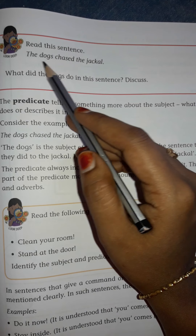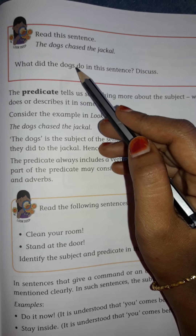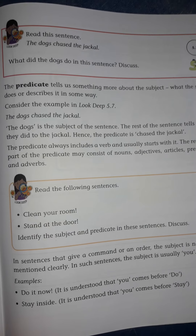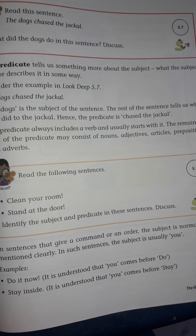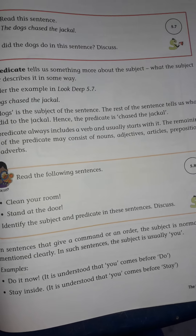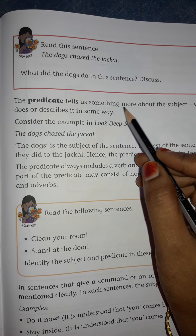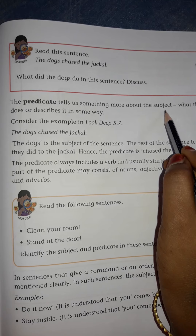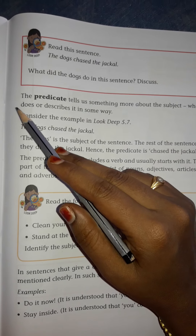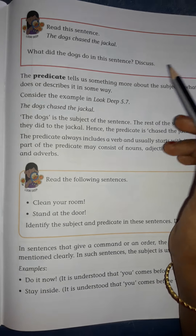Read this sentence: 'The dogs chased the jackal.' What did the dogs do in this sentence? The dogs chased the jackal. The predicate tells us something more about the subject — what the subject does, or describes it in some way.